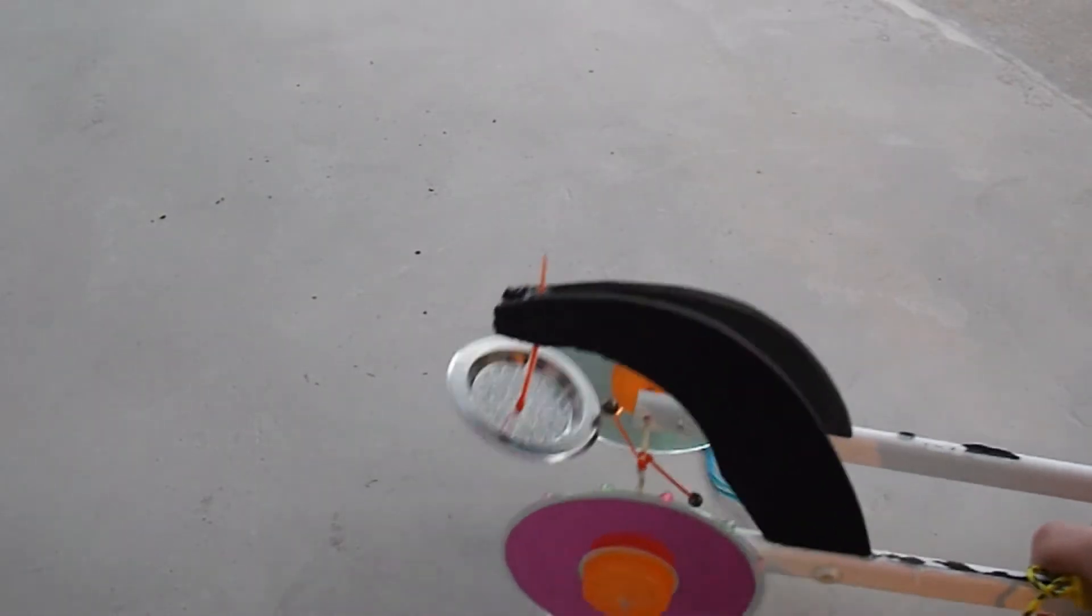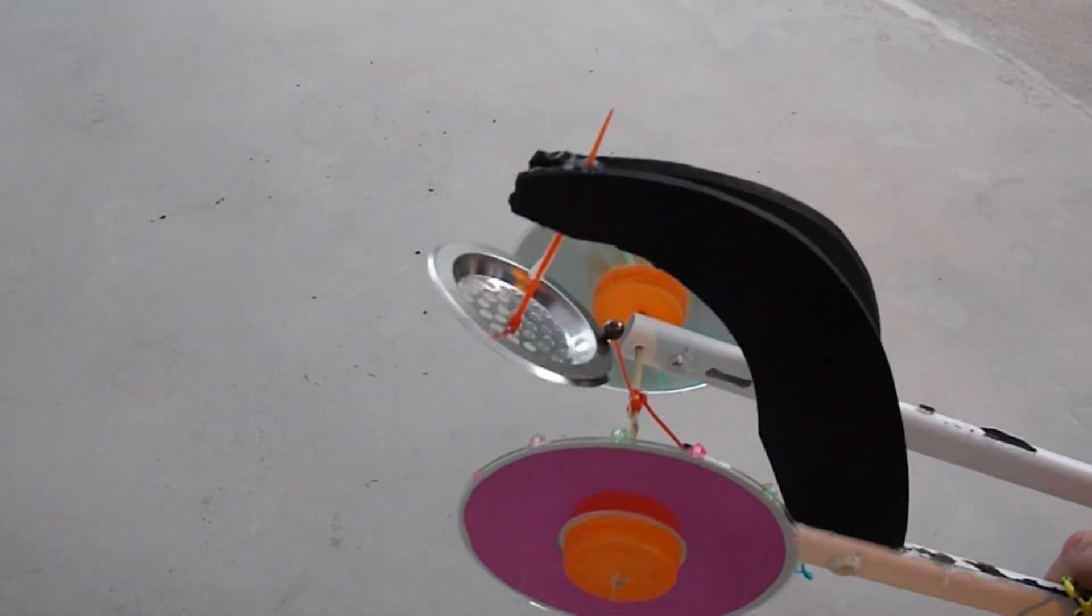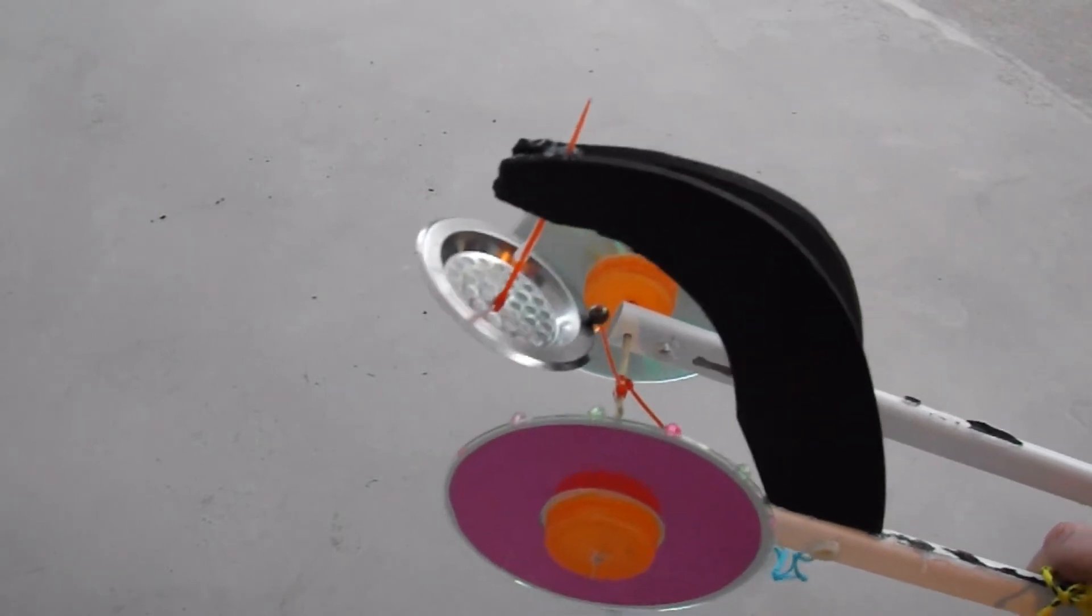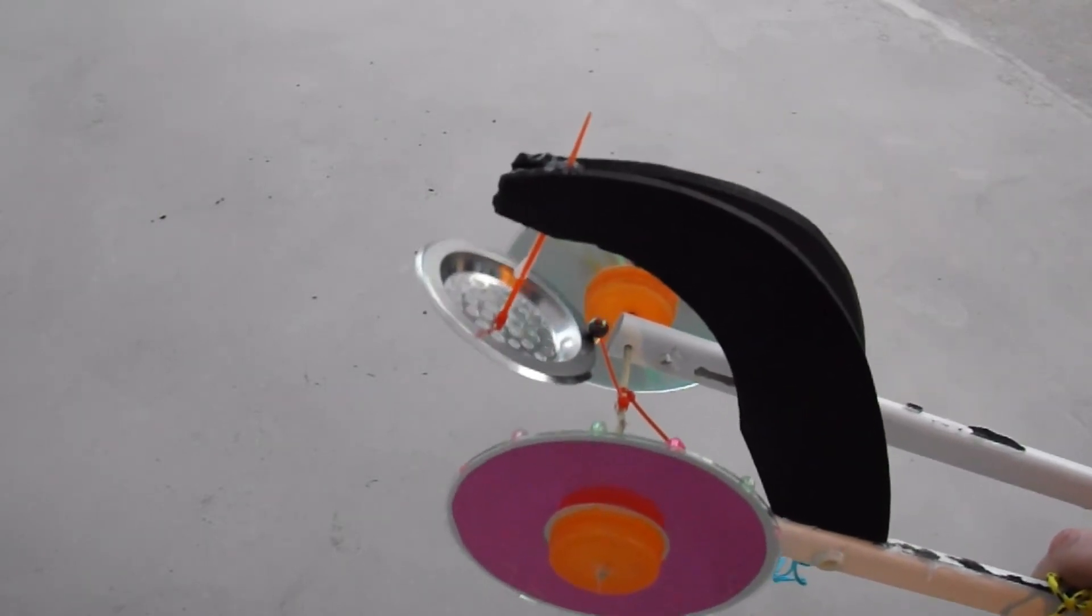What we've got at the front here is a bit of polystyrene pizza tray. Looks like a crane arm really, doesn't it?